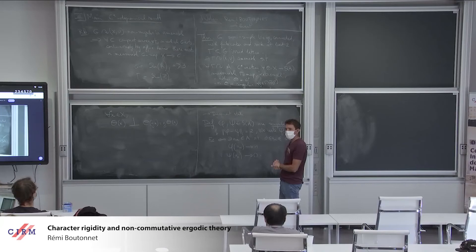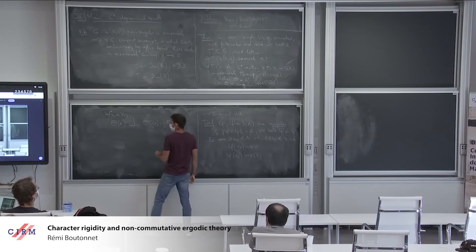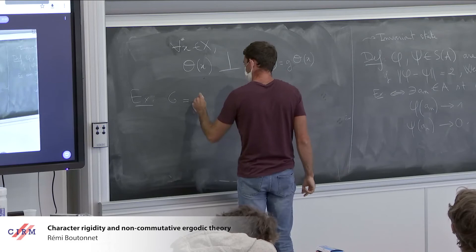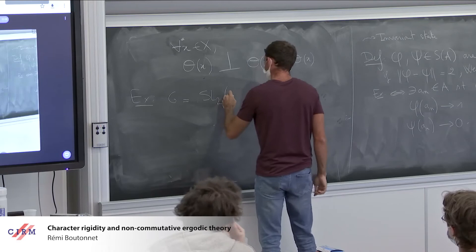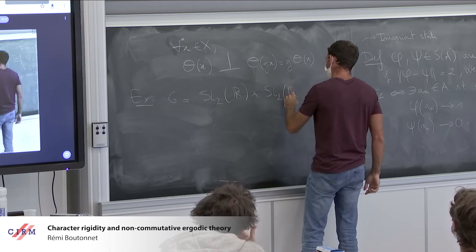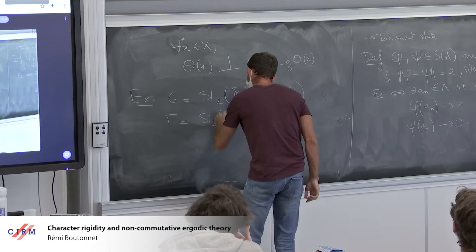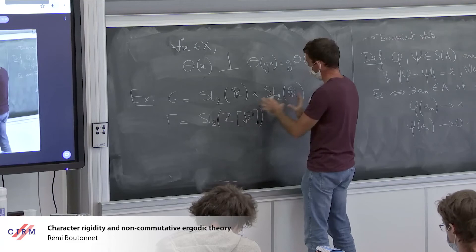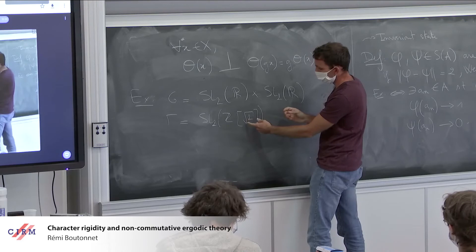So that's the theorem. To complete the example we will look at in the rest of the mini-course: G will be, typically, SL(2,ℝ) × SL(2,ℝ), and Γ would be SL(2, ℤ[√2]), which is embedded diagonally in the product — here you take the identity embedding, and here you take the embedding twisted by the Galois automorphism, so √2 goes to −√2. You put it diagonally and you get an irreducible lattice.